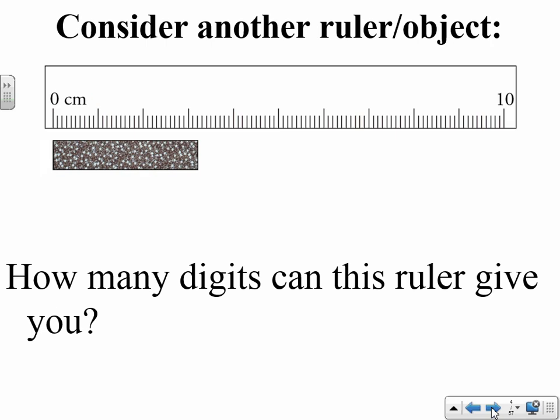Let's try a second ruler with the same object. And the question is the same. How many digits can this ruler give you? Same as before, this is a 1, this is a 2, a 3, a 4. So we're still between 3 and 4. But now we can actually measure and be a little more precise. So now this is, this right here is a 0.1, this is a 0.2, this is a 0.3.